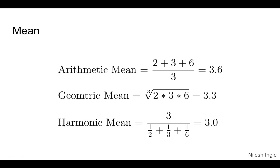Before moving to the next metrics, here is a quick recap on different types of means. The arithmetic mean of 2, 3, and 6 is 3.6 — add them and divide by the number of samples. The geometric mean takes the product and then the root of that product. The harmonic mean is given by its standard relation. We'll be using these in the upcoming slides.